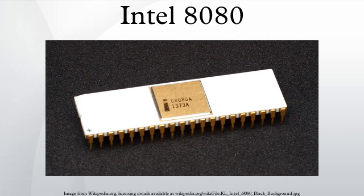The address bus had its own 16 pins, and the data bus had 8 pins that were possible to use without any multiplexing. Using two additional pins, it was possible to assemble simple microprocessor devices very easily. Only the separate I/O space, interrupts, and DMA required additional chips to decode the processor pin signals.